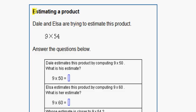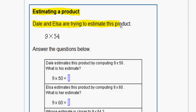In this problem we are estimating a product. Dale and Elsa are trying to estimate this product, 9 times 54. Answer the questions below.